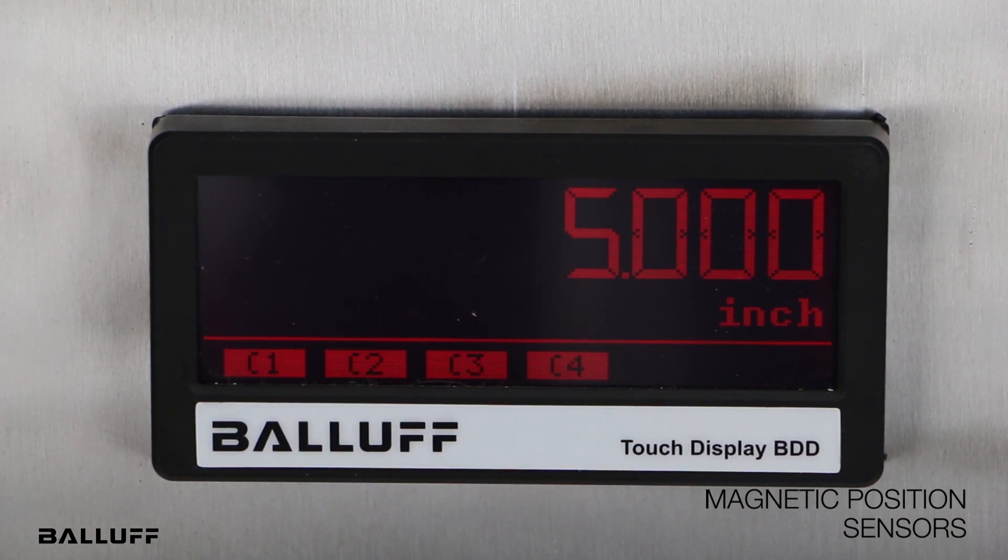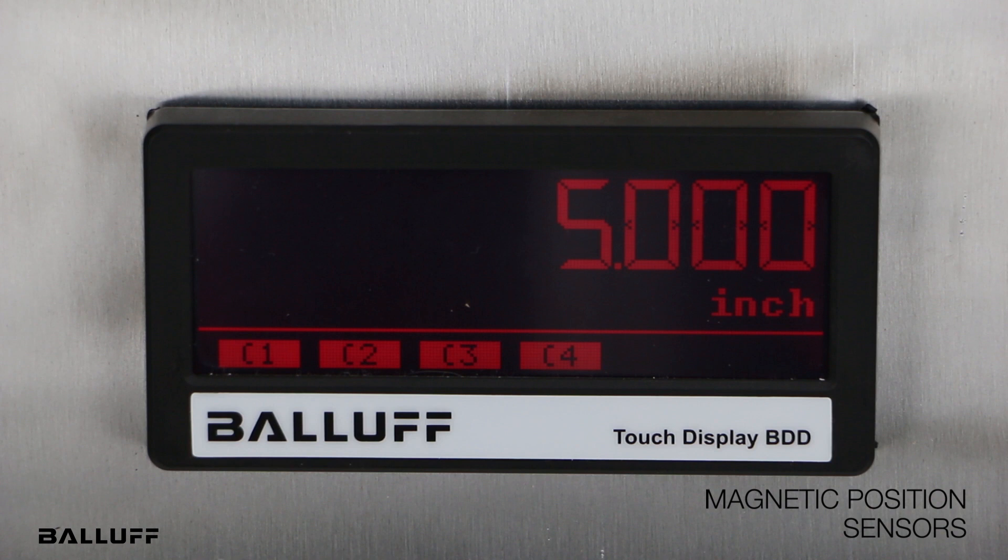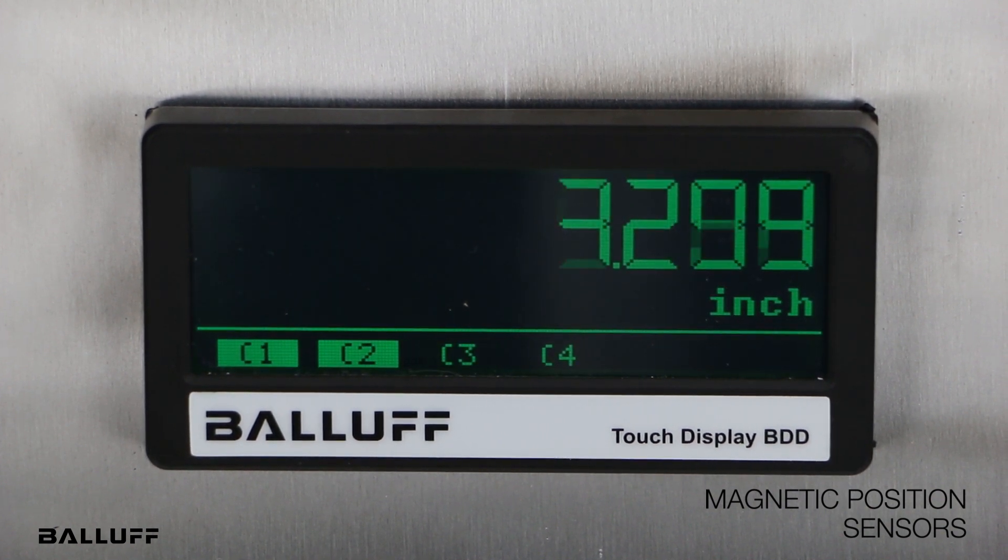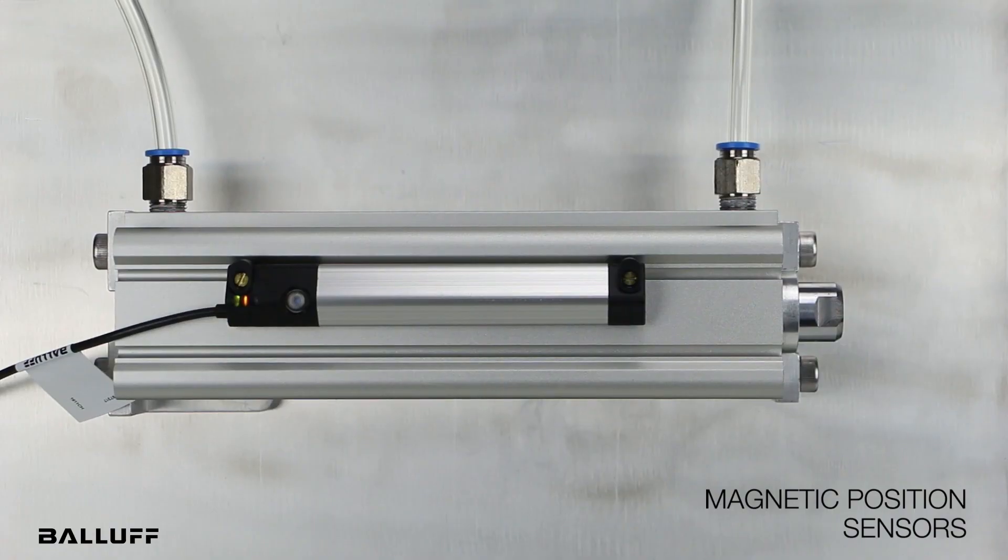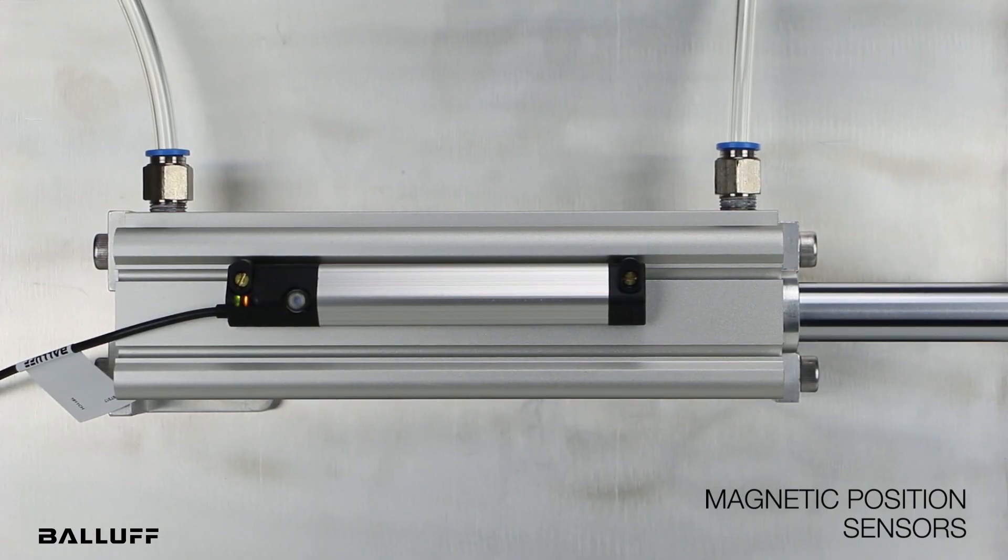The BMP magnetic position sensors calculate the actual target position of the magnet and output it as a position-dependent analog or IO-Link signal. The sensors' compact size allows for integration in very limited installation spaces.